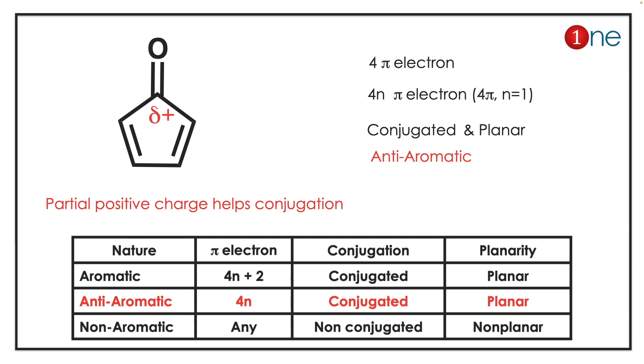So the system will have delocalization. If you count the pi electrons, there are totally four pi electrons. It's a 4n pi electron system where n equals one. So the system is conjugated and planar.